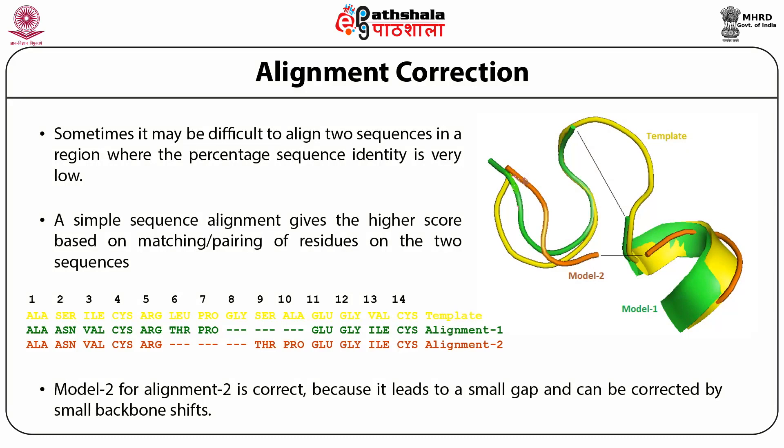A simple sequence alignment gives a higher score based on the matching or pairing of residues on two sequences. For the template shown in yellow, we have two sequences in green and red as alignments 1 and 2. When comparing, it is quite evident that the model 2 generated for alignment 2 would be more correct, because it leads to a smaller gap that can be corrected by small backbone shifts of that particular protein.